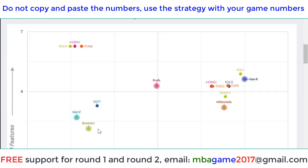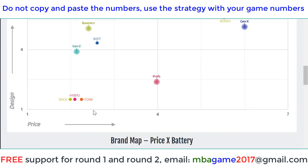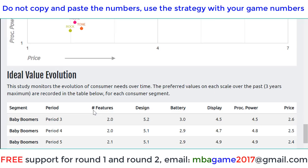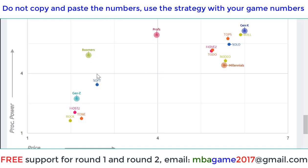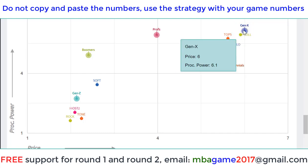You can also see the brand map here — it's very important. For example, if you want to get the best product for the Sol9 market and you know that processing power and price are important, look at that. You see the Sol9 sells very well in Gen Z but not in Baby Boomer. You can update the Sol9 for Gen Z and Baby Boomer. Also, you see the Sol9 sells very well in Millennials but not for Gen X.